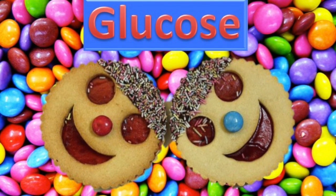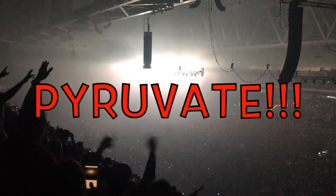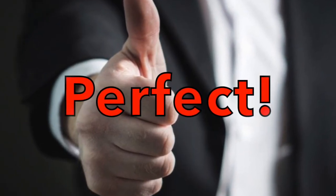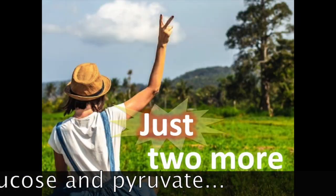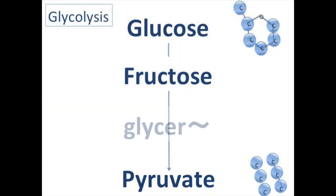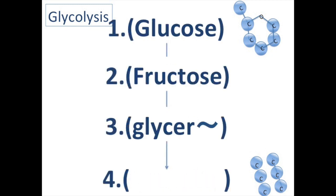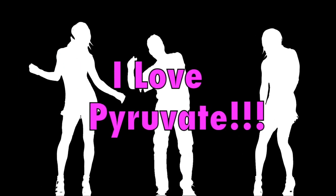Glycolysis is a metabolic pathway to pyruvate! Excuse me, we can't pass the exam just with glucose and pyruvate. Let's remember two more: fructose and glyceride. Glucose, fructose, glyceride, and pyruvate!